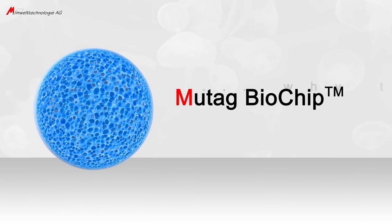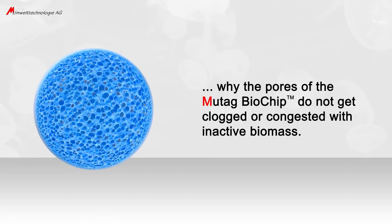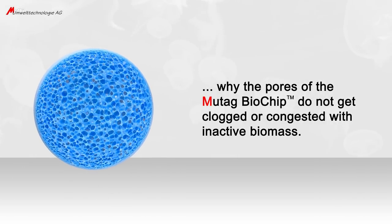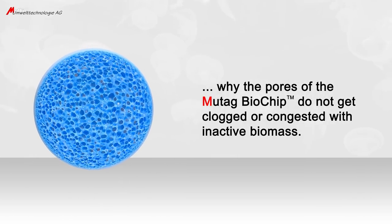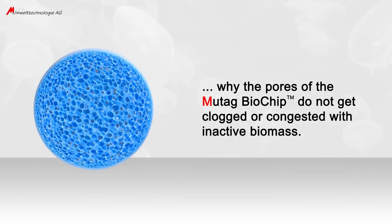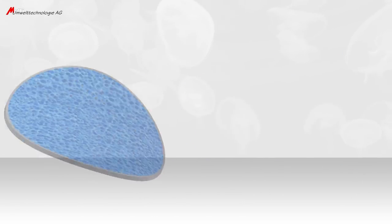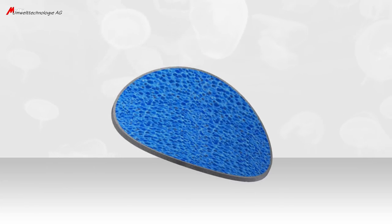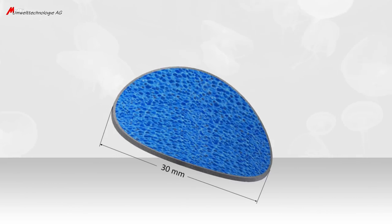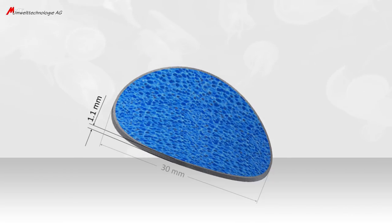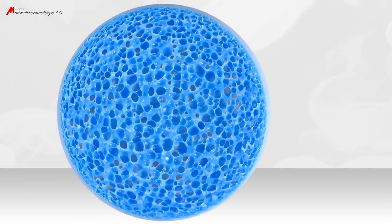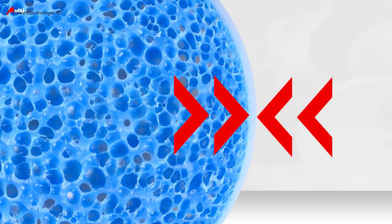We further declare why the pores of the Mutag Biochip do not get clogged or congested with inactive biomass. The Mutag Biochip is a parabolic disc with an outer diameter of approximately 30 mm and a thickness of approximately 1.1 mm. In the outer area of the disc, there is a homogeneous protection ring.